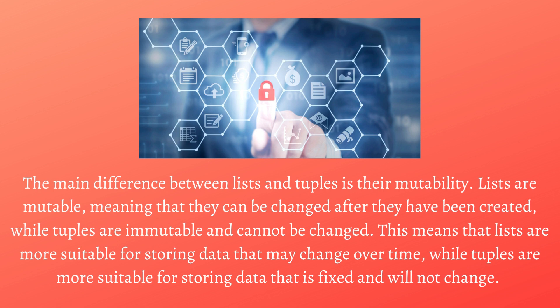The main difference between lists and tuples is their mutability. Lists are mutable, meaning that they can be changed after they have been created, while tuples are immutable and cannot be changed. This means that lists are more suitable for storing data that may change over time, while tuples are more suitable for storing data that is fixed and will not change.